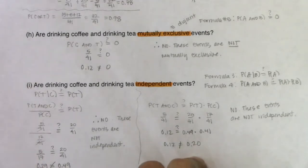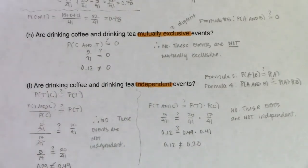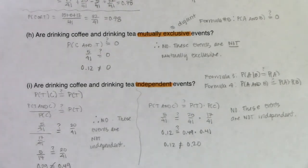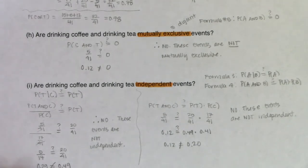So there are two problems looking at Venn diagrams. We're going to move on to table problems next, revisiting all of this same information with the tea and coffee drinkers, but putting it in a table format.